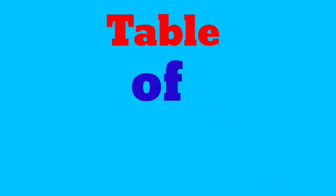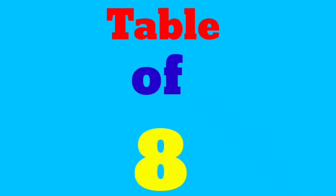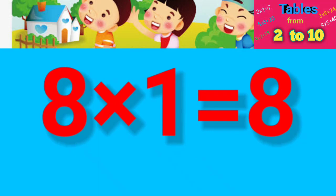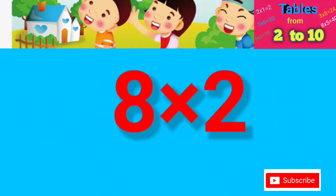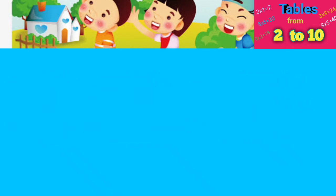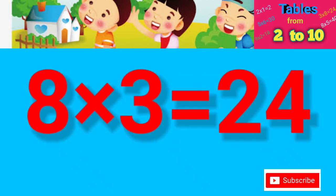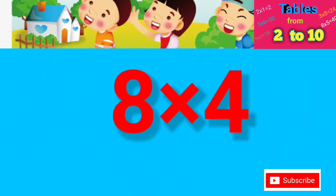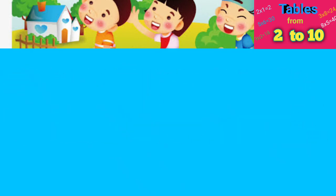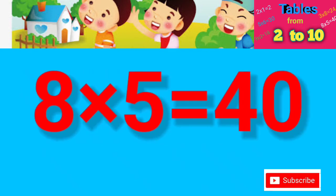Table of 8: Eight one's are eight, eight two's are sixteen, eight three's are twenty-four, eight four's are thirty-two, eight five's are forty.